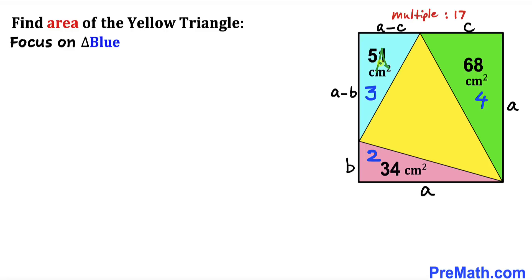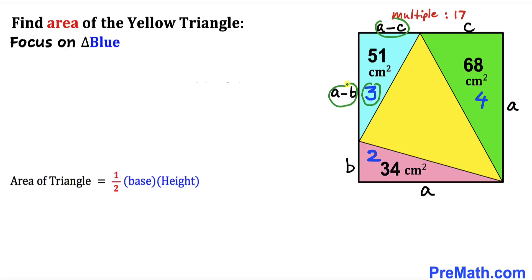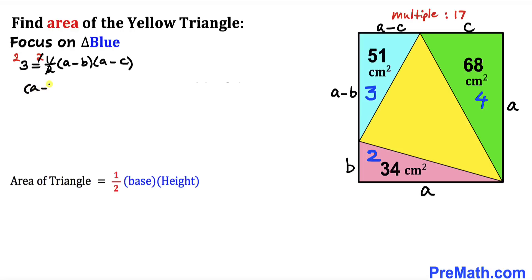Let's focus on the blue triangle and recall the area formula: area = ½ × base × height. For the blue triangle, the area is 3, the base is a minus c, and the height is a minus b. So we get: 3 = ½ × (a − b) × (a − c). Multiplying both sides by 2 gives (a − b)(a − c) = 6. Let's call this Equation 1.